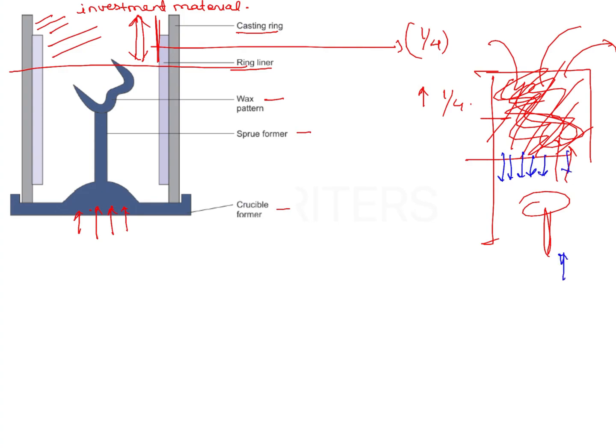When the molten metal flows inside, this pressure is going to push the metal back. Wherever there is a sprue connection on the casting, you will see a concave kind of a porosity.